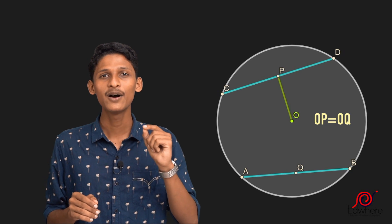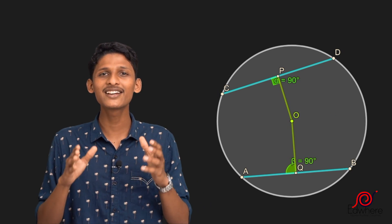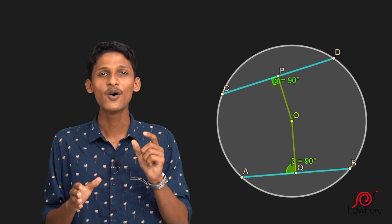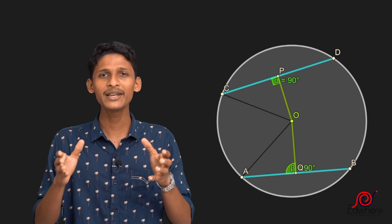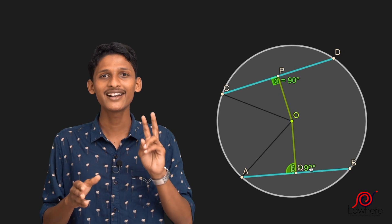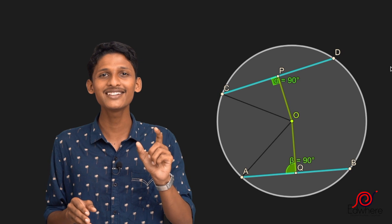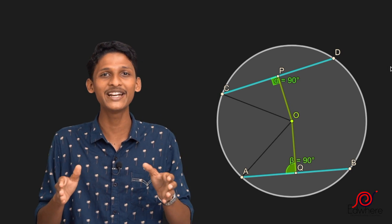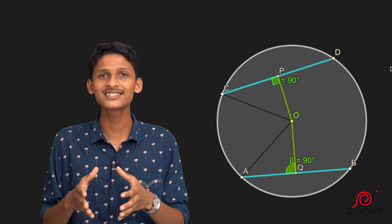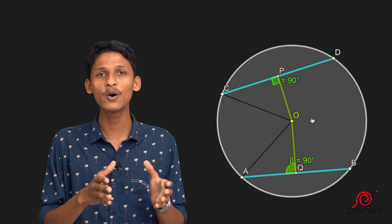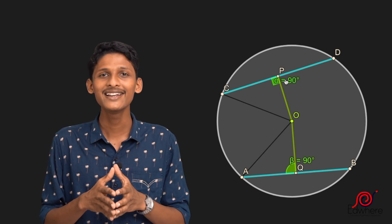We have a circle. Now I will join points C, O, and A. If you join the lines, you will be able to draw two congruent triangles. You will find triangle OAQ and triangle OCP. You will find these two triangles.